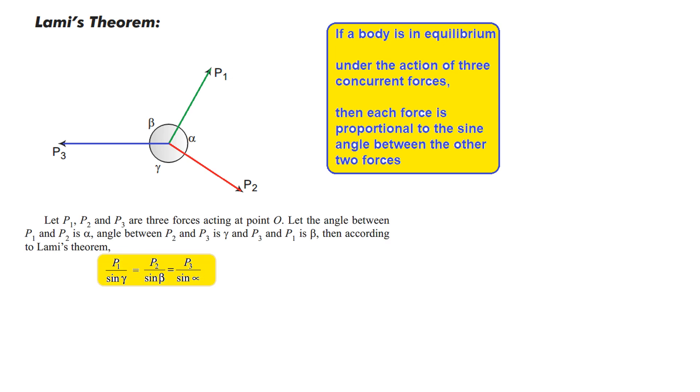So let P1, P2, P3 are the forces acting on the point O. The angle between the P1 and P2 is alpha.